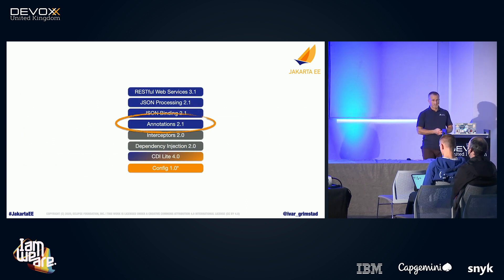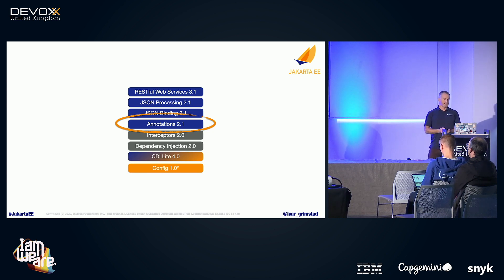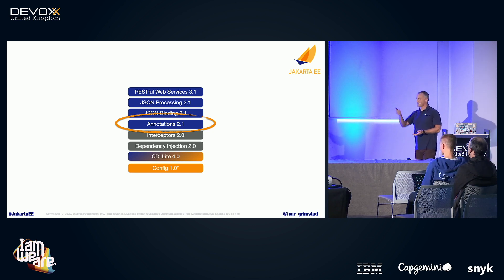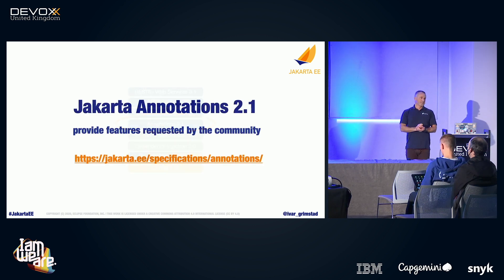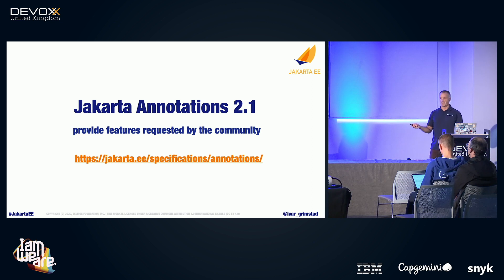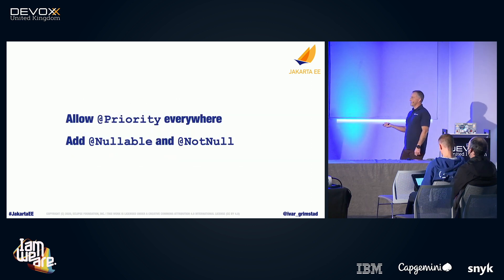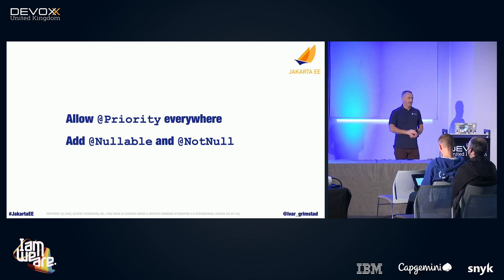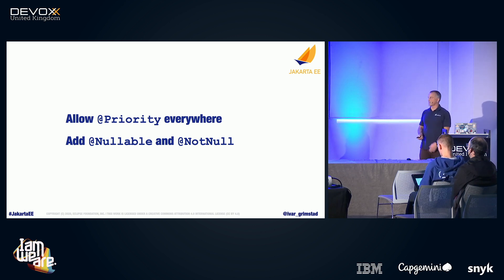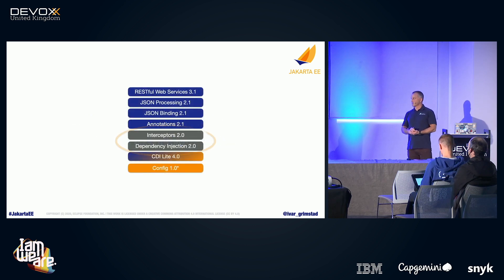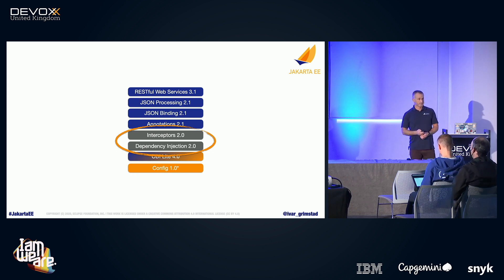For Jakarta Annotations, they came up with a plan because CDI Lite needed something from them. They're adding the ability to use @Priority everywhere in your applications, and adding @Nullable and @Null annotations so they're available throughout the platform. Interceptors and Dependency Injection are not doing anything for this release — they are stable as they are.